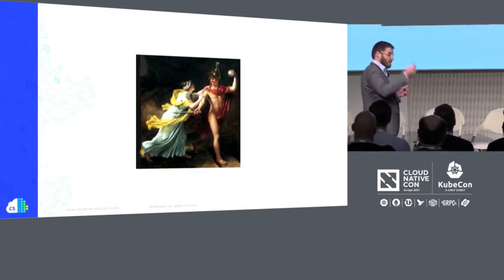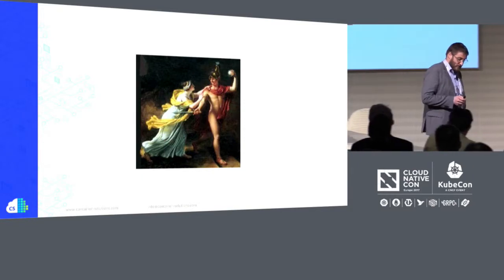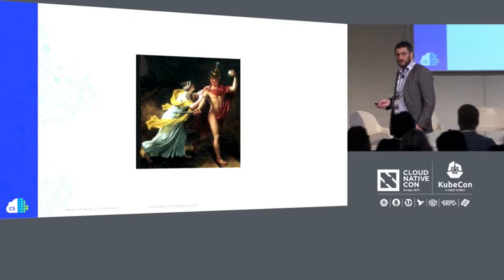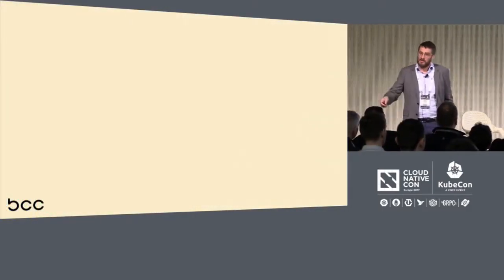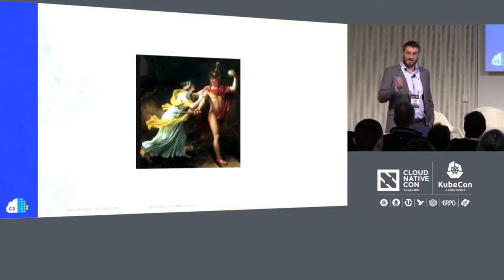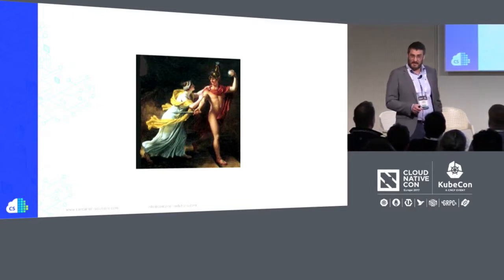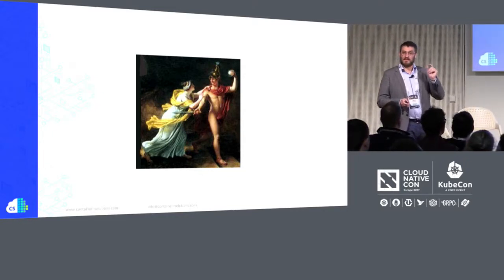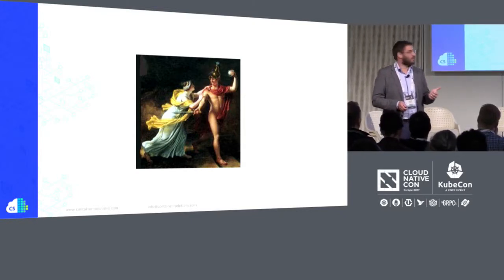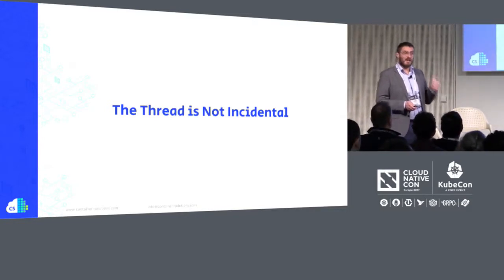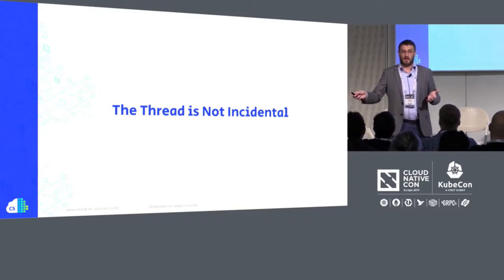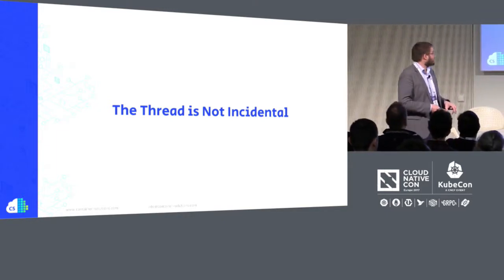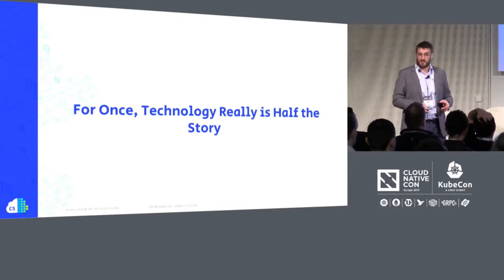The final subtle point of Theseus is the technology. I've spent the last 20 years saying to people: the technology is incidental. It doesn't matter what tech you've got — a bad team with the best tools in the world will still get nowhere. But in this story, the thread is not incidental — it's the enabling technology that allows Theseus to see whole. And in the world of cloud native, the technology is also not incidental. We couldn't have gone cloud native 20 years ago. So actually, technology is a key driving force — just half the story, no more, not the whole story.